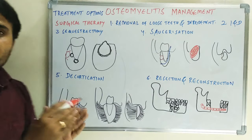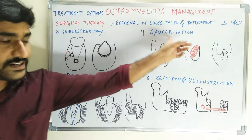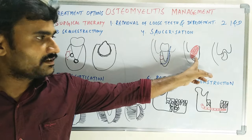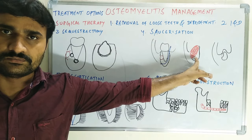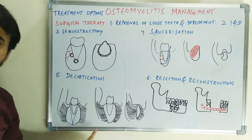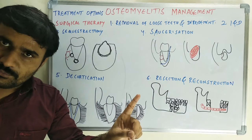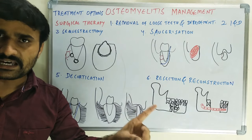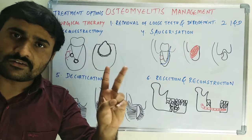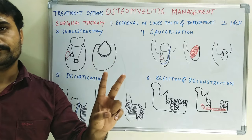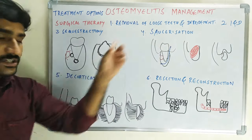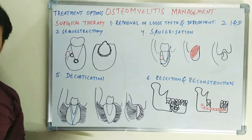In the disease process, the buccal cortical plate is affected. In saucerization we remove the buccal lateral cortex; in decortication we also remove the lateral cortex buccally along with some part of the lower border of the mandible. This is the main difference between saucerization and decortication.